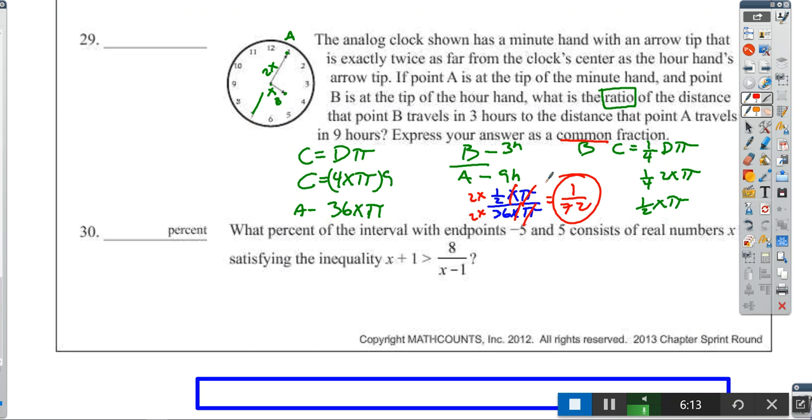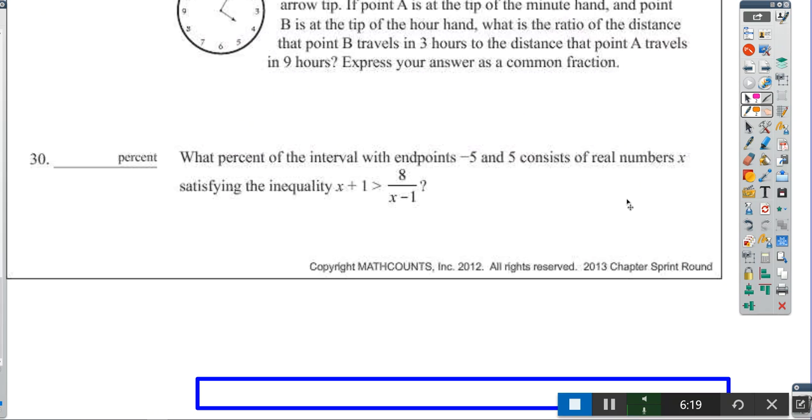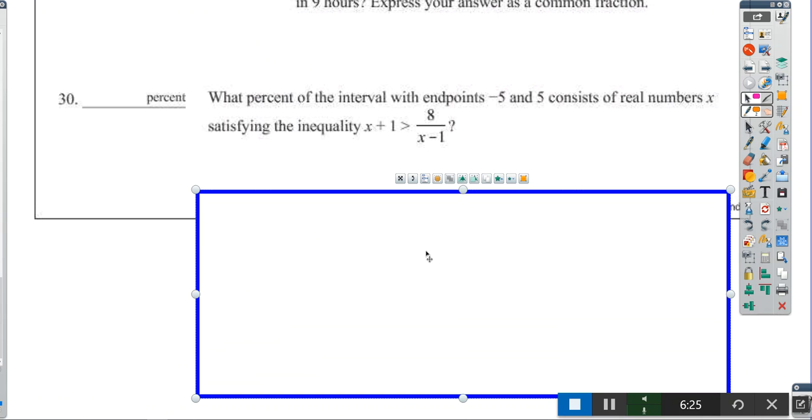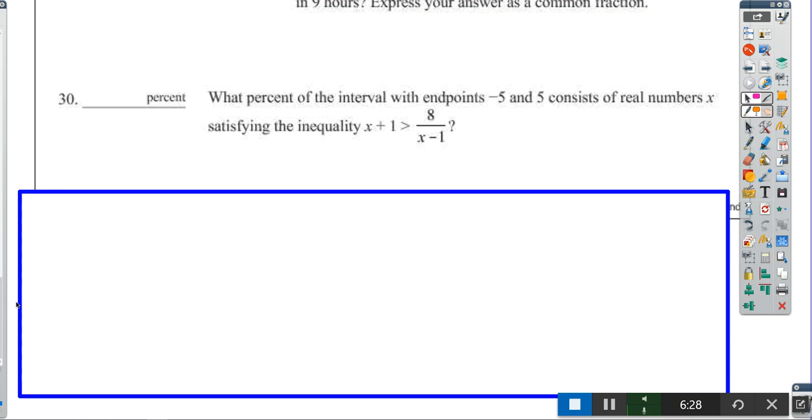Problem number 30 is a fun little quadratic problem. What percent of the interval with endpoints -5 and 5 consists of real numbers? We're looking for a percent. We're looking for numbers between these two, and those two numbers are 10 apart. So we know our answer is going to be something over 10.